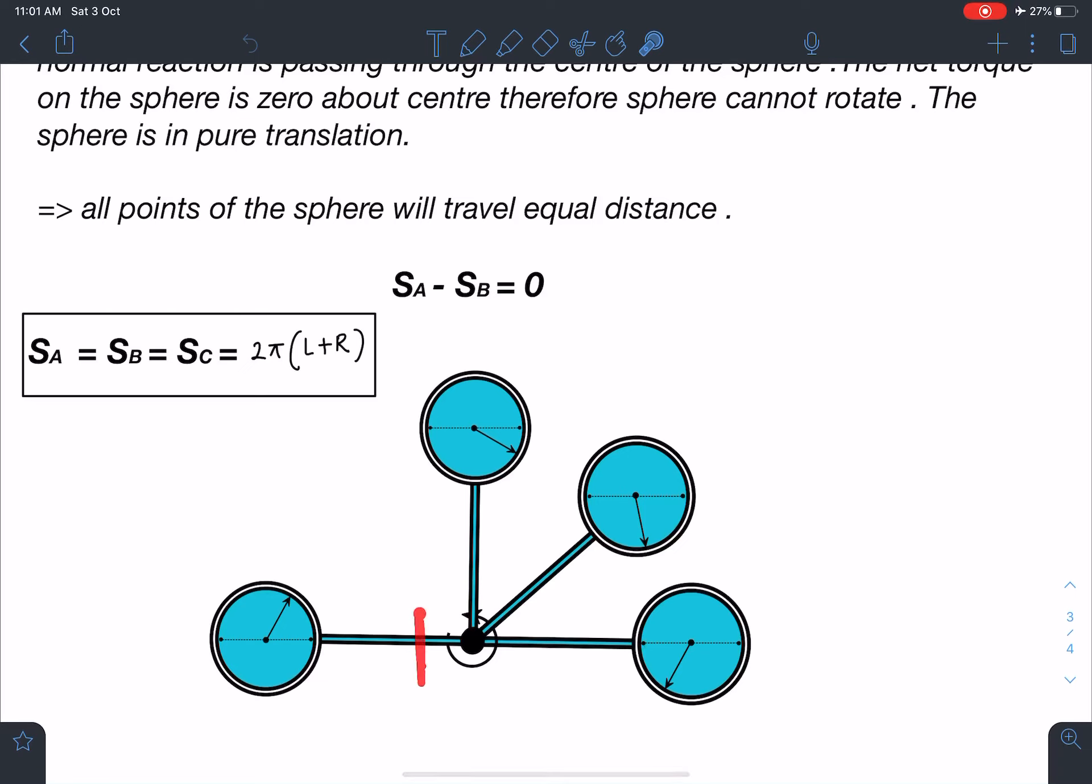But in such a way that total distance traveled by A and B is going to be same. You can see here, earlier this was A and now here this is A.